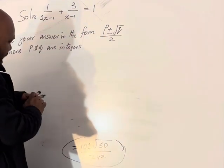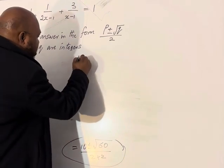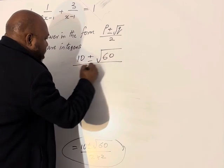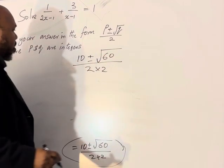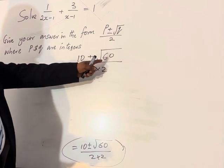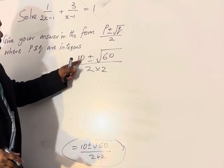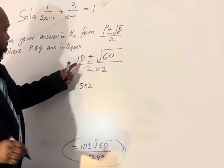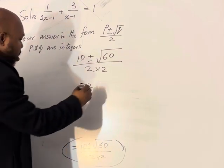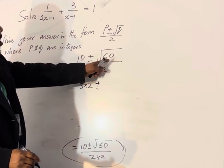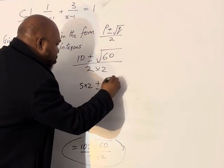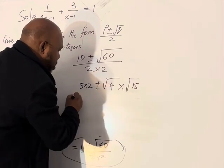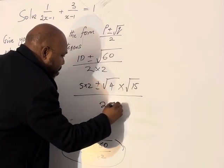So we have 10 ± √60 over 2×2. We can change this to 10 ± √(4×15) over 2×2.